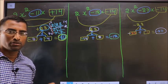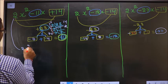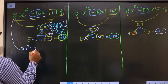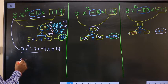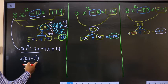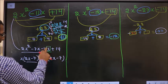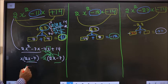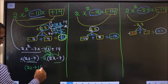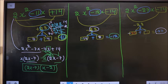Now factorizing the first expression: 2x² - 11x + 14 becomes 2x² - 7x - 4x + 14. Taking x common from the first two terms gives x(2x - 7). From the last two terms, taking -2 common gives -2(2x - 7). So the factorized form is (2x - 7)(x - 2).